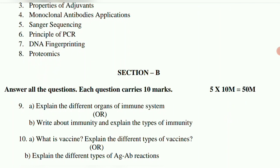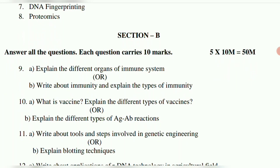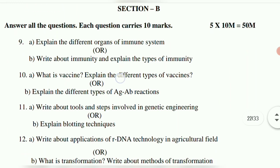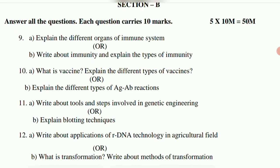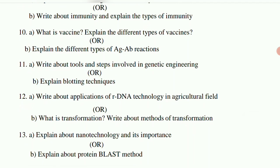I have a lot of COVID-19, so I am suffering a lot, so I am related to vaccines, so there are some chances of it. Ending 10th B — explain the different types of antigen-antibody reactions. 11th — write about tools and steps involved in genetic engineering. B — explain blotting techniques. 12th — write about applications of rDNA technology in the agricultural field. B — what is transformation, write about methods of transformation.